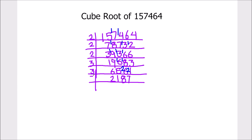Again we can divide it by 3. 3 times 7 is 21, 3 times 2 is 6, 2 is remainder, this becomes 27 and 3 times 9 is 27.